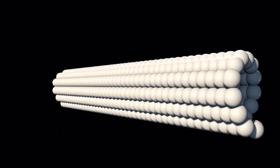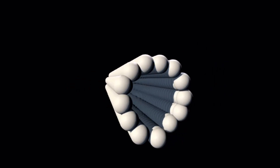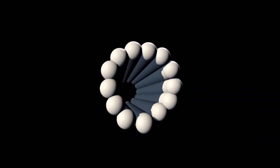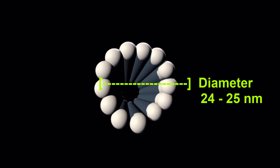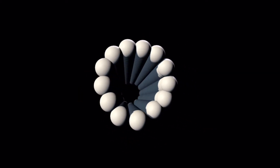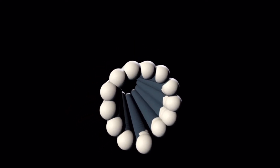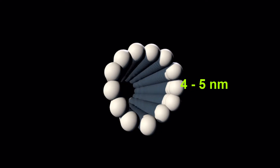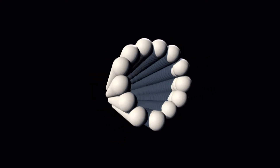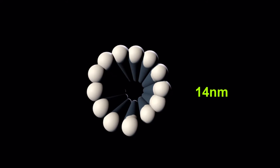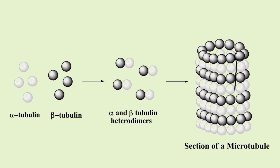Each microtubule is made up of 13 protofilaments that assemble and organize themselves into this hollow, long, and unbranched tube that has a diameter of about 24 to 25 nanometers. The wall of the microtubule is made up of these 13 protofilaments, and the diameter of one protofilament will be around 4 to 5 nanometers. The diameter of the lumen of the microtubule itself will be around 14 nanometers.